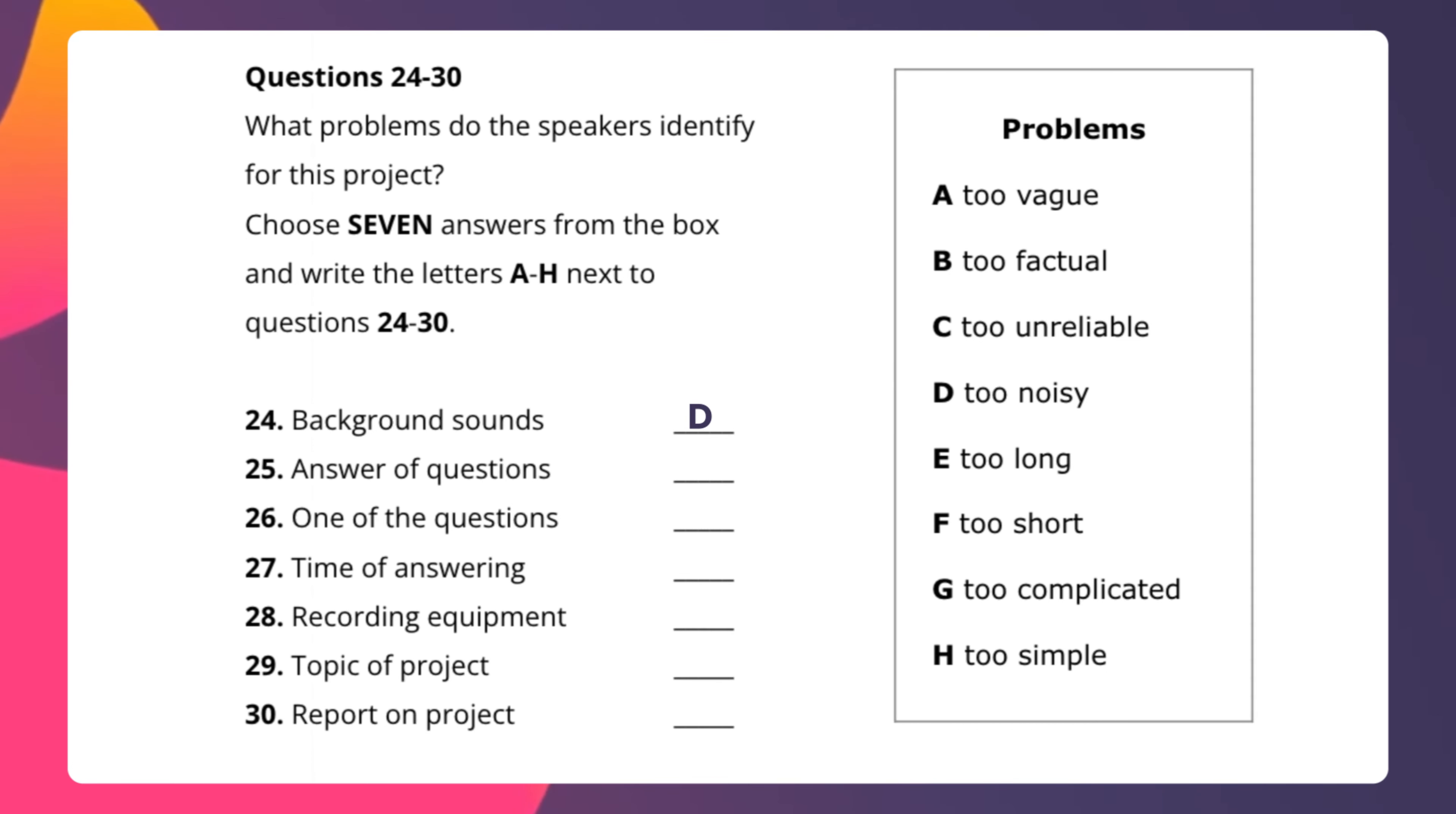In the similar manner we have question number 25, answer of questions and the answer is F, too short. 26, one of the questions, the answer is G, too complicated. 27, time of answering, E, too long. 28, recording equipment, C, too unreliable. 29, topic of project, A, too vague. Number 30, report on project, the answer is B, too factual.